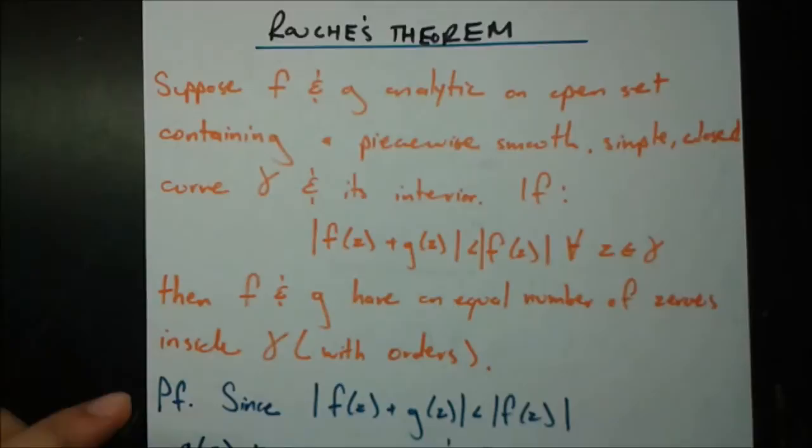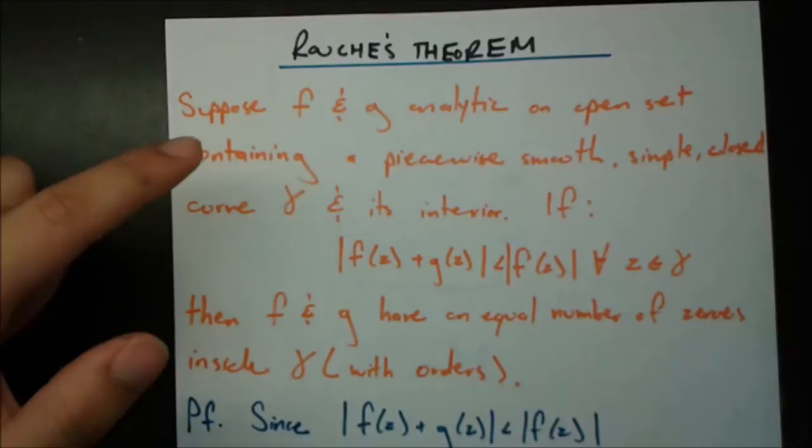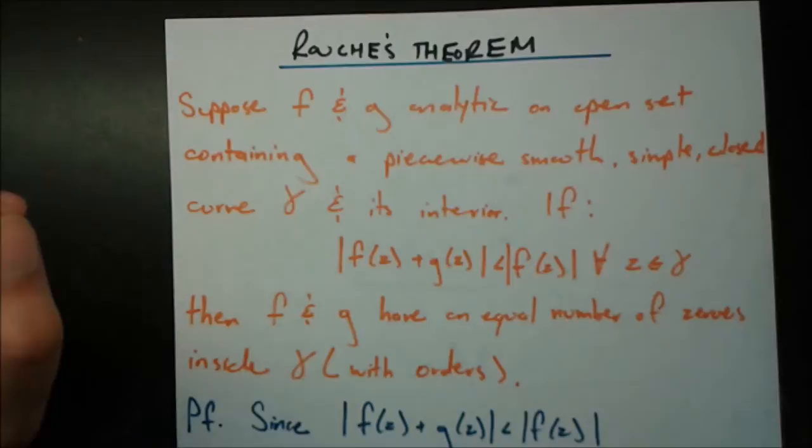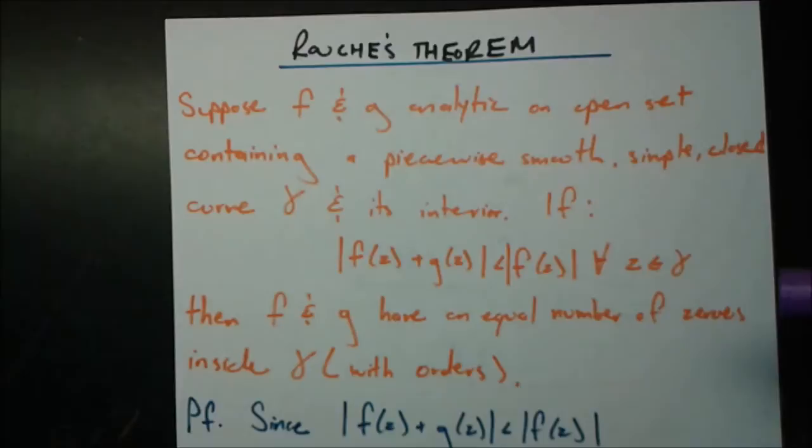So in orange here I have the theorem. It says: suppose f and g are analytic on an open set containing a piecewise smooth, simple closed curve gamma and its interior. So we have two functions, f and g, which are both analytic on some open set — a domain — containing a piecewise smooth, simple closed curve gamma and its interior.